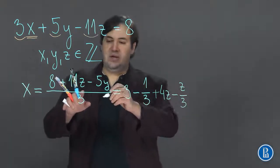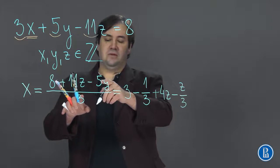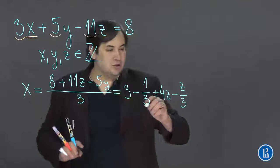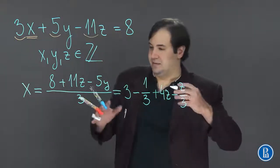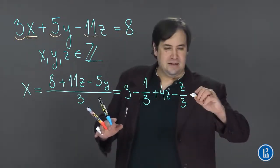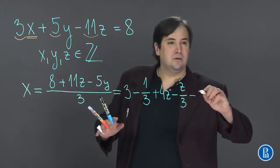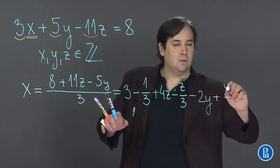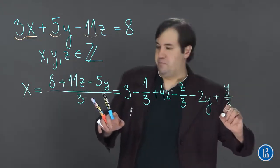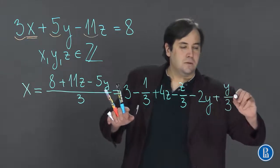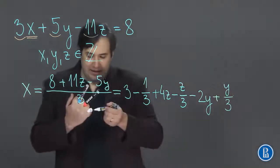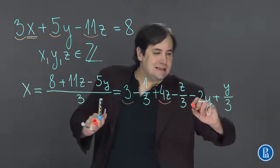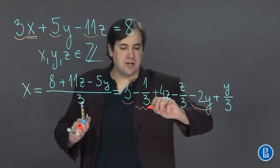And we have minus 5y over 3, where we can also use the same trick and say that this is minus 2y plus y over 3. So now take the integer part and separate it from the fractional part.